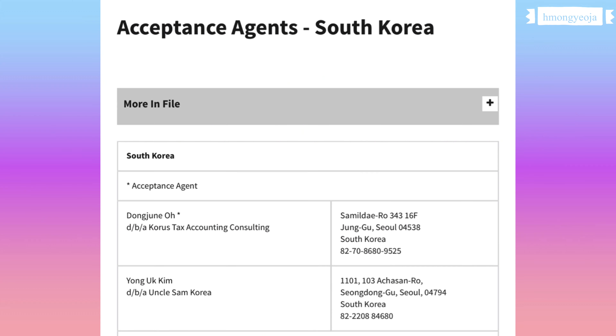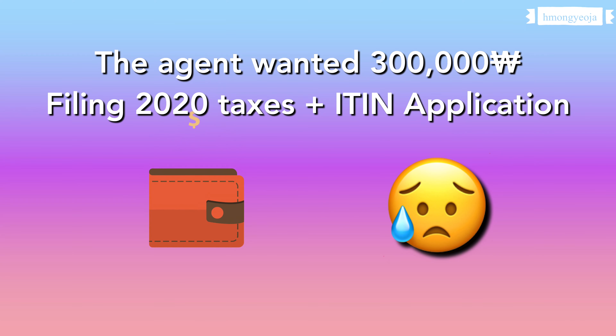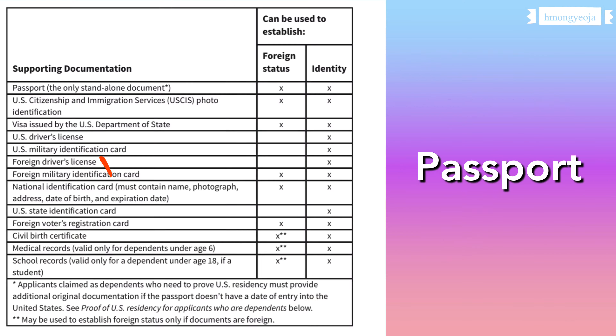There are two ways that you can apply for an ITIN in Korea. The first way is just mailing in the W7 application with your taxes. The second way is using an agent in Korea. If you check the IRS website you'll be able to find the list of acceptance agents in your country. When I contacted the agent, he wanted about 300,000 won, which I thought was too expensive, so I just decided to fill out the form myself.